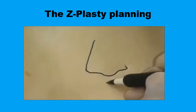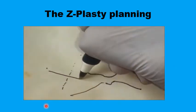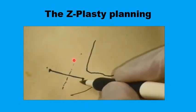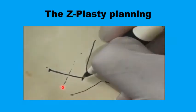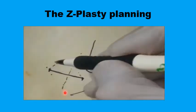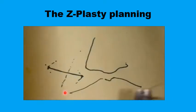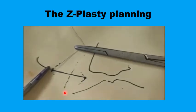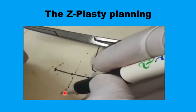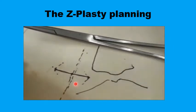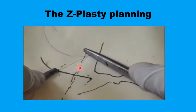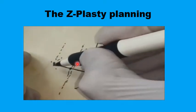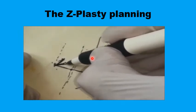Here is an example where the scar runs perpendicular to the nasolabial fold, and you want to change its direction to conform better with the relaxed skin tension lines. You consider the two options for the Z-plasty and begin the measuring process. You can use a thread or suture as a compass — marking a line perpendicular to the scar, and if you take an equal length that intersects with this line, you can predict a 60-degree angle.